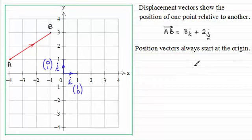For example, suppose I took the vector c and that was 3i plus 2j. What would that look like? We have a starting point because position vectors always start at the origin.